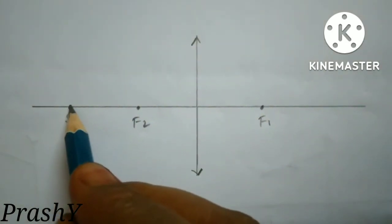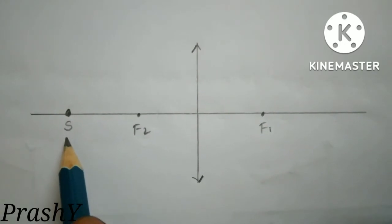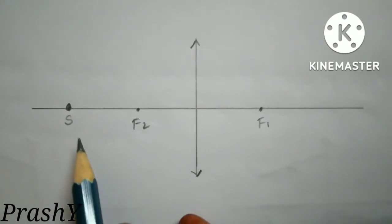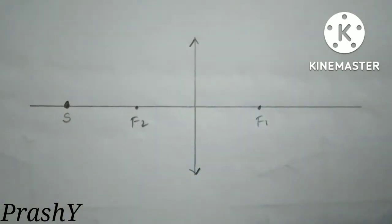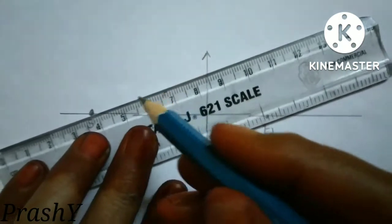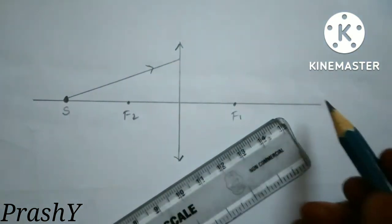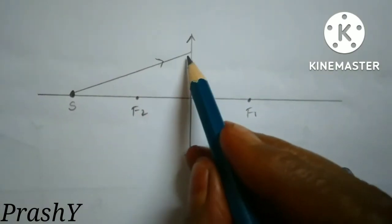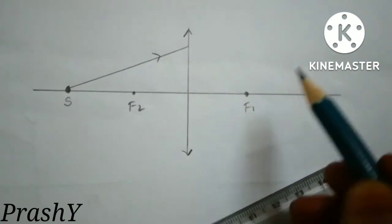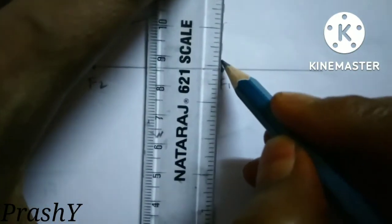Suppose a point object is placed at S. When the source is a point source, the image will also form on the principal axis. Let us trace where the image will fall. A ray from the source passes through the lens as an incident ray. This ray makes some angle with the principal axis, so it meets at a point on the focal plane. I draw the focal plane here.